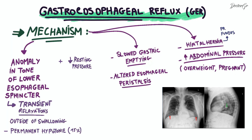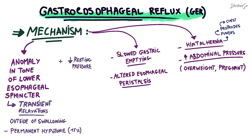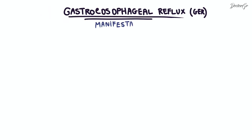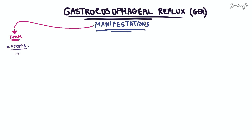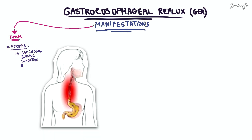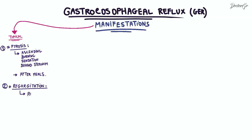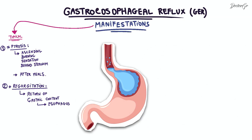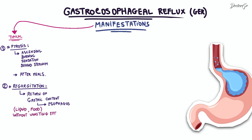A hiatal hernia occurs when the upper part of the stomach or fundus protrudes from the abdomen through the hiatal opening and enters the chest cavity. Clinical manifestations of GER include typical profiles with two primary symptoms. Firstly, pyrosis, which translates as an ascending burning sensation behind the sternum, usually appearing after meals. Secondly, regurgitation involves the return of gastric content into the esophagus, which can be liquid or food, without requiring any vomiting effort.